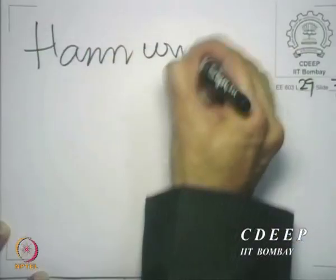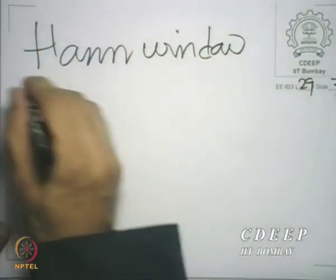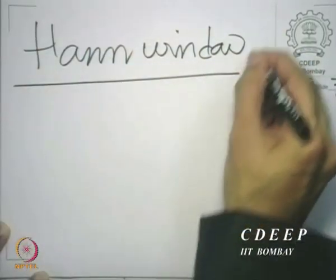With that background, we must now see some examples of window functions. We saw two in the previous lecture, but we must see more in this one. We will now look at a very common window called the Hann window. We shall now take one by one expressions for different windows.